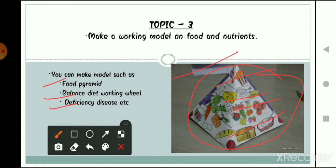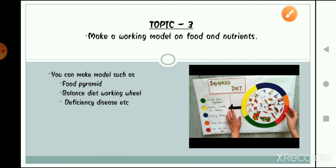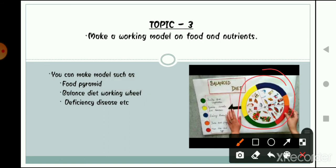Your model can be a working model or a simple model — that is up to your creativity. For the balanced diet wheel, you can paste chart paper on cardboard and create a spinning wheel that shows different food groups and their components as it turns. You can either make working models or simple models of your chosen topic, as long as it relates to food and nutrition.